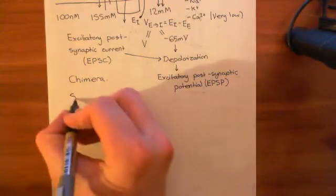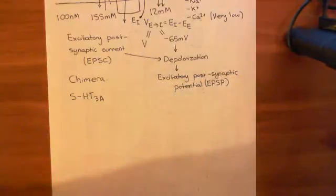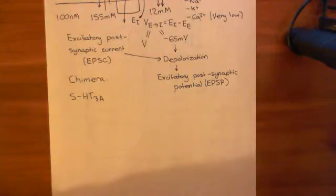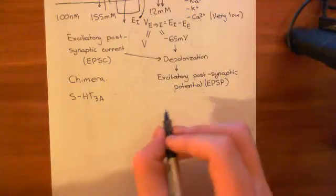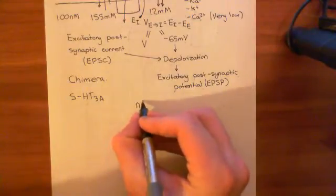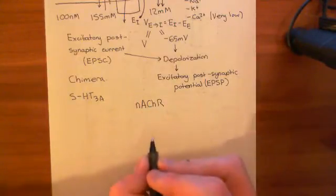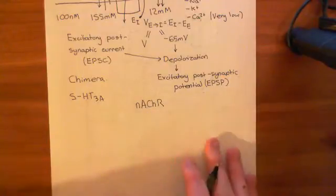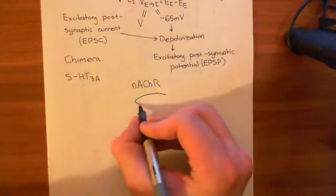We have seen this 5-HT3A protein, which was an example of a cys-loop ligand-gated ion channel protein subunit. We could assemble five of these together to make a 5-HT3A homopentamer. There is another great family of cys-loop ligand-gated ion channels, which are the nicotinic acetylcholine receptors, and this is another cys-loop ligand-gated ion channel.